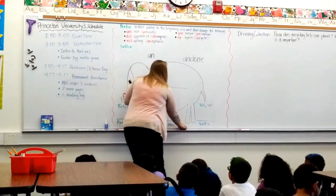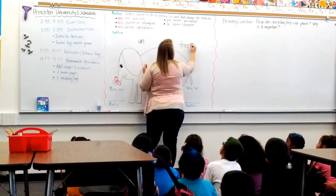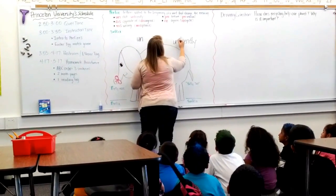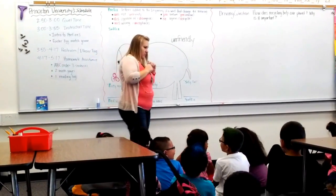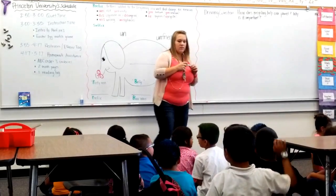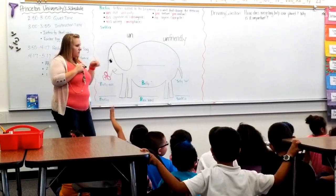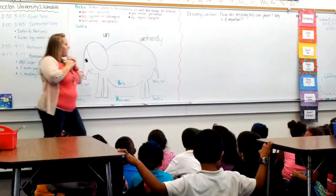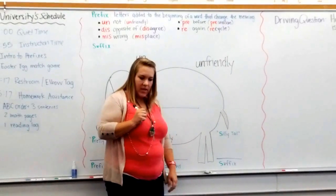Let me try another one, and I want you to tell your partner what the word will mean. This is the word "friendly." When you're friendly, you're being really nice to someone, right? You're treating them like you're their friend. What if I put two letters in front? Tell your partner. "Unfriendly" means you're not being very nice. You're not being friendly, right? Because when we added the "un," it made it mean "not." So instead of being friendly, you're being not friendly — you're being unfriendly.